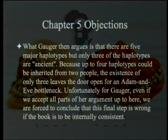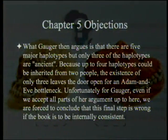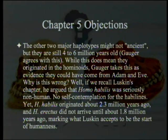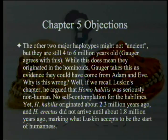What Gauger argues is that there are five major haplotypes, but only three of the haplotypes are what she calls ancient. Because up to four haplotypes could be inherited from two people, the existence of only three leaves the door open for an Adam and Eve bottleneck — or from a creationist point of view, leaves the door open for an Adam and Eve creation.